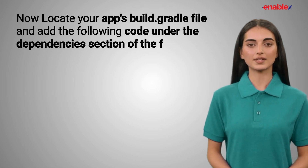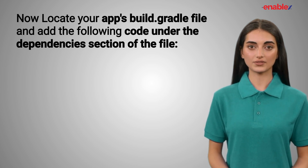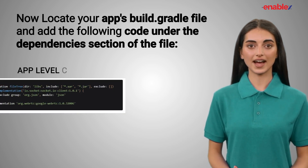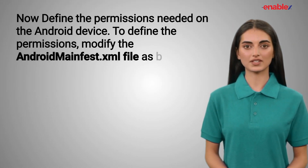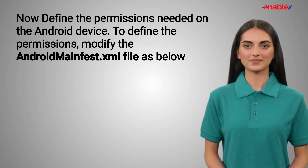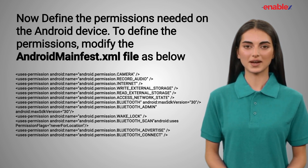Now, locate your app's build.gradle file and add the following code under the dependencies section of the file and app level configurations. Now, define the permissions needed on the Android device. To define the permissions, modify the AndroidManifest.xml file as below.